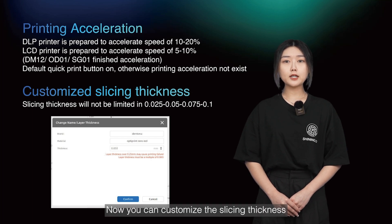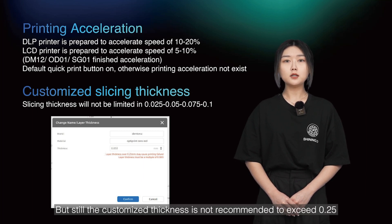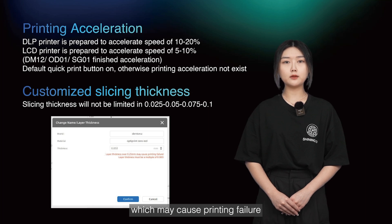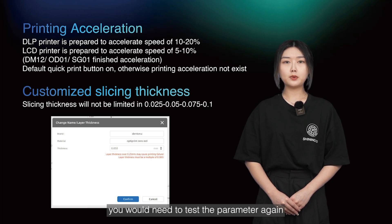Now you can customize the slicing thickness. Thickness will not be limited to 25, 50, 75, and 100 microns. However, the customized thickness is not recommended to exceed 250 microns, which may cause printing failure. A friendly reminder: when you change the layer thickness, you will need to test the parameters again, otherwise this may cause printing failure.